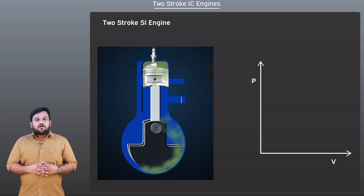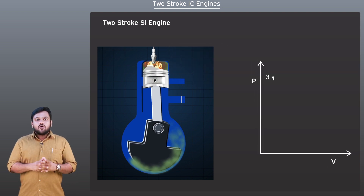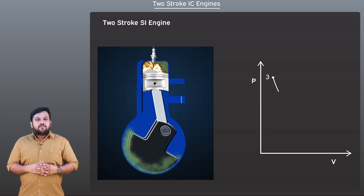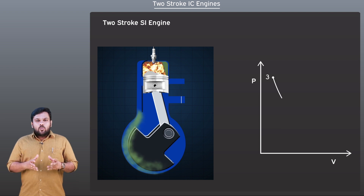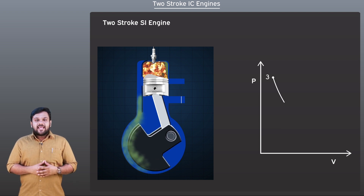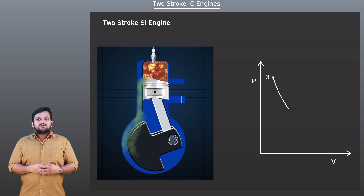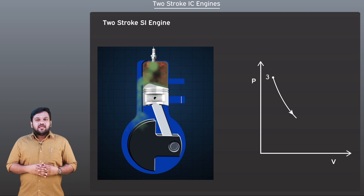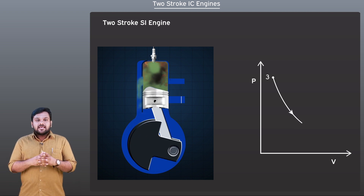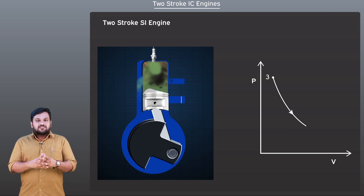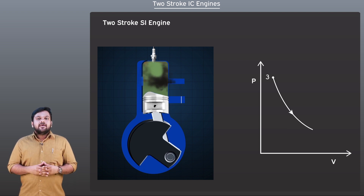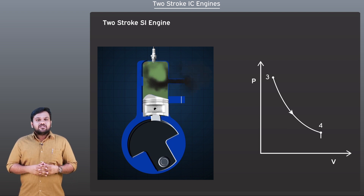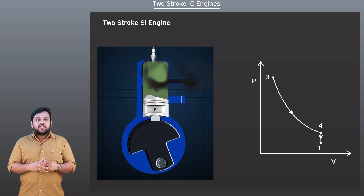During the power stroke, the piston moves from the top dead center towards the bottom dead center due to the expansion of the air-fuel mixture compressed in the previous cycle. When the piston moves downwards, the exhaust port is uncovered, giving the exhaust gases a chance to escape into the atmosphere. During this time, the air-fuel mixture previously sucked into the crankcase is thrown upwards towards the cylinder head through the narrow gap between the cylinder wall and the piston — the transfer region — due to the swirling action created by the rotation of the crank.